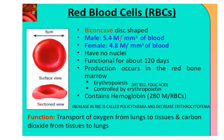RBCs or erythrocytes are biconcave disc-shaped structures. In males, the count is 5.4 million per cubic mm of blood, and in females the range is 4.8 million per cubic mm. They have no nuclei and are functional for about 120 days. Production occurs in the red bone marrow — this process is known as erythropoiesis and is controlled by a protein known as erythropoietin. They contain hemoglobin and their main function is transport of oxygen from lungs to tissues and carbon dioxide from tissues to the lungs.